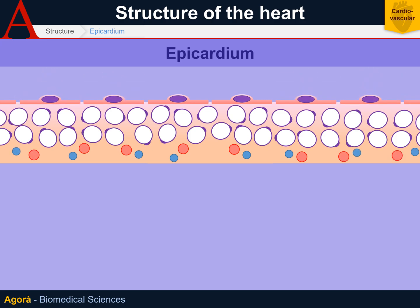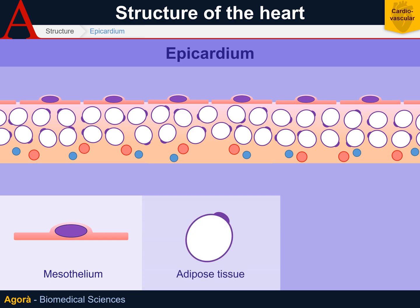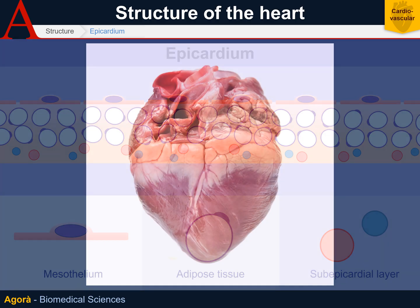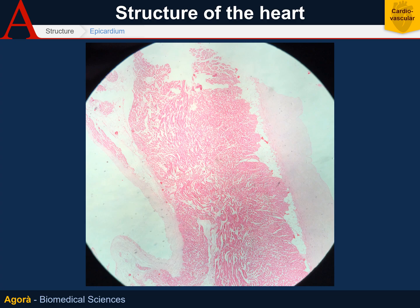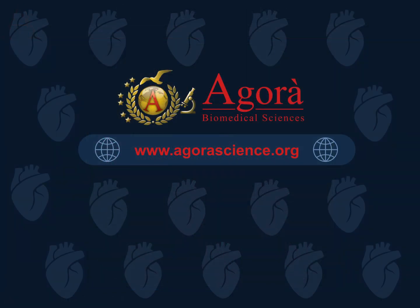Finally, let's talk about the epicardium — the outermost layer of the heart. The epicardium is made up of different layers: the first and most superficial is the mesothelium, which is 50 to 200 microns thick. Then there is a thin layer of adipose tissue, and finally the subepicardial layer containing larger coronary branches. Since the epicardium is translucent and transparent, it is almost invisible macroscopically, but under the microscope we can clearly see the superficial layer, the adipose layer, and the various vessels.